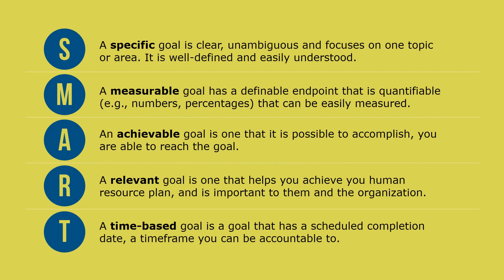To make your goal SMART, it needs to conform to the following criteria. Specific: a specific goal is clear, unambiguous, and focuses on one topic or area — it can be communicated to others without confusion. Measurable: a measurable goal has a definitive endpoint and is quantifiable through numbers or percentages. Achievable: an achievable goal is one that's possible to accomplish. Relevant: a relevant goal helps you achieve your human resource plan and is important to the organization. And finally, time-based: a time-based goal is one that has a scheduled completion date.